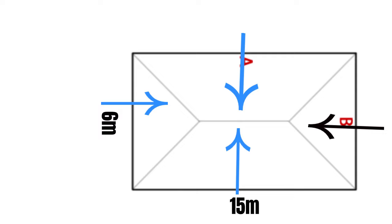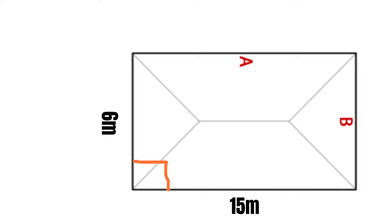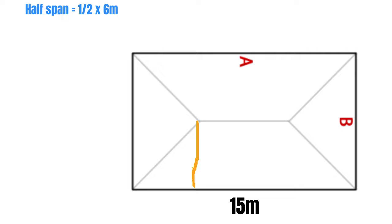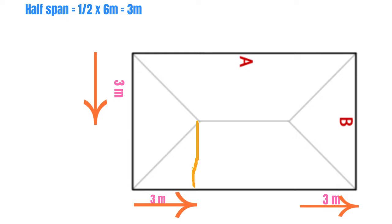Using the half-span rule, let's calculate the heights. Half the span will be half of 6 meters, that is 3 meters. This dimension is 3 meters on each side. This angle here is 45 degrees, so the height will be tangent of 45 degrees multiplied by 3 meters, which equals 3 meters.